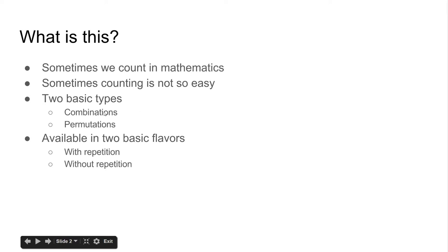And we have two basic types of things that we're going to worry about here. We have combinations and permutations, and they're available in two basic flavors. That's with repetition and without repetition.